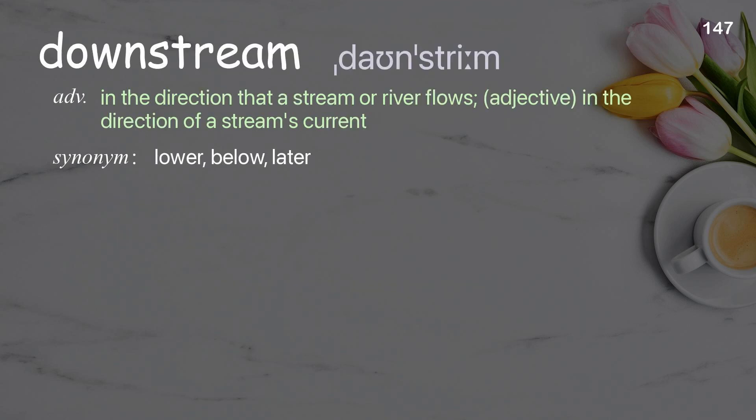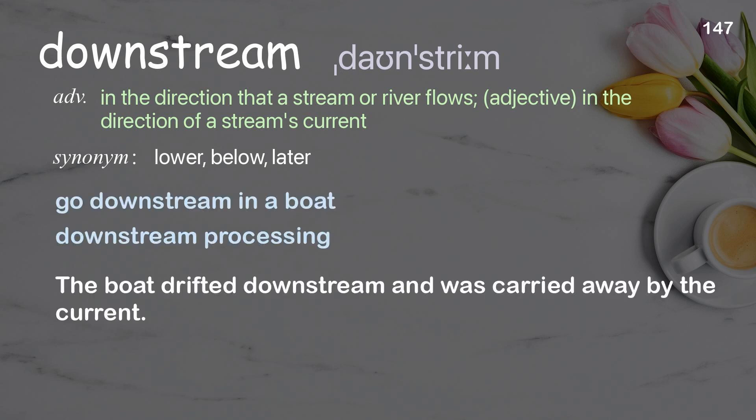Downstream: in the direction that a stream or river flows. Adjective: in the direction of a stream's current. Examples: go downstream in a boat, downstream processing. The boat drifted downstream and was carried away by the current.